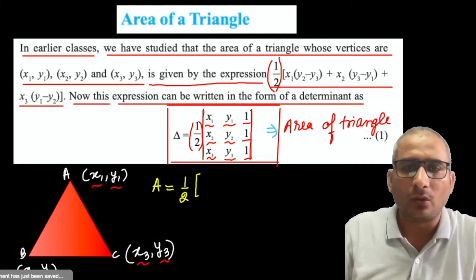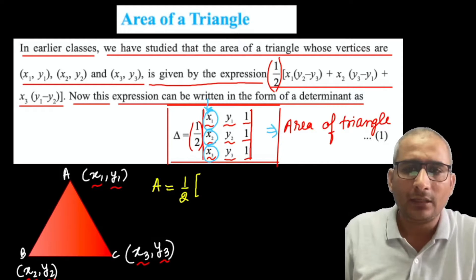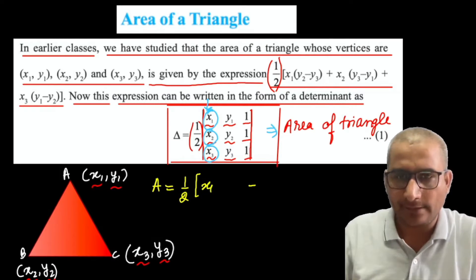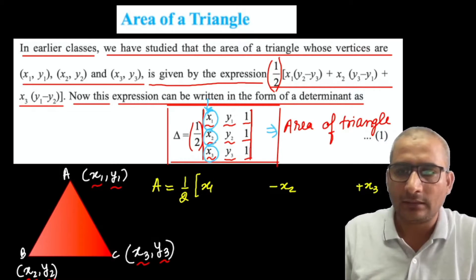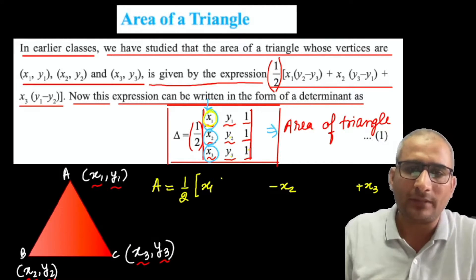Expanding along column 1, the elements we take are x1, x2, x3. x1 gets a plus sign, x2 gets a minus sign, and x3 gets a plus sign. For x1, we hide its row and column to get the 2×2 determinant with elements y2, 1, y3, 1, which simplifies to y2 minus y3.